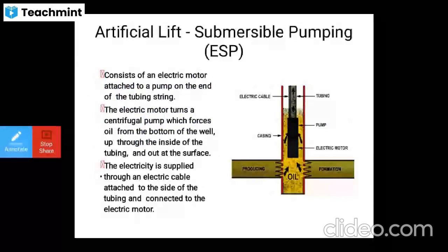The next method is ESP, that is electrical submersible pumps. It consists of an electric motor attached to a pump on the end of the tubing string. The electric motor rotates or turns the centrifugal pump, which forces oil from the bottom of the well up through the inside of the tubing and out at the surface. Electricity is supplied through an electric cable attached to the side of the tubing and connected to the electric motor.